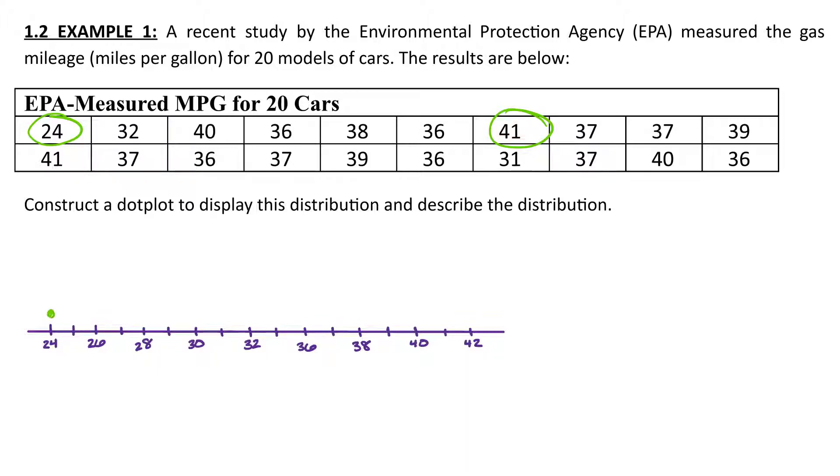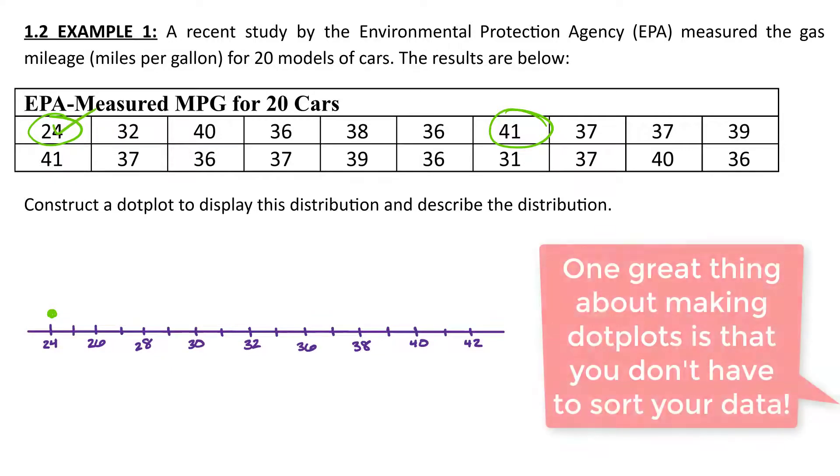So for 24, we've got our dot. Maybe check them off as we go. And then 32. And then 40. And 36. And 38.